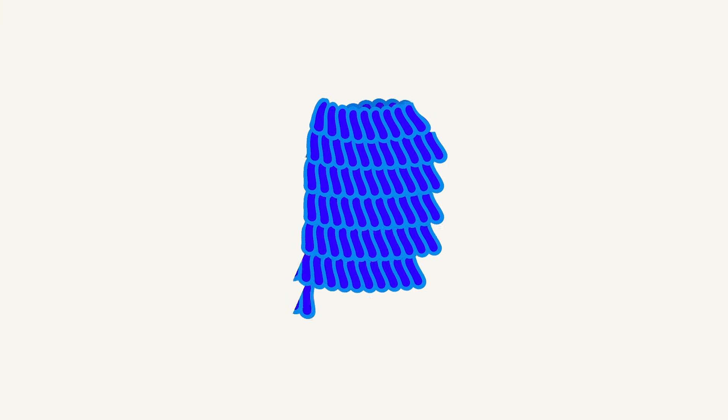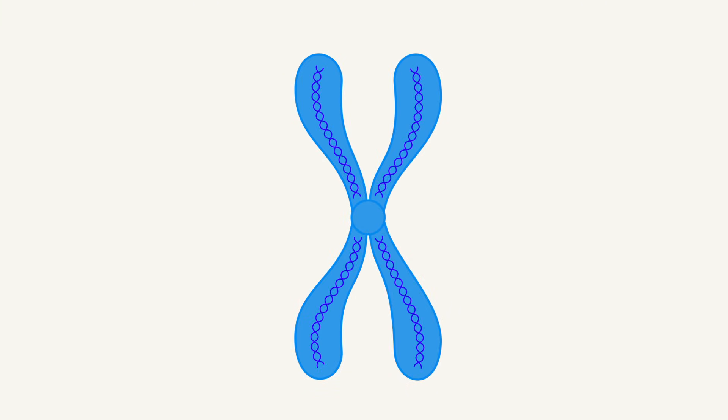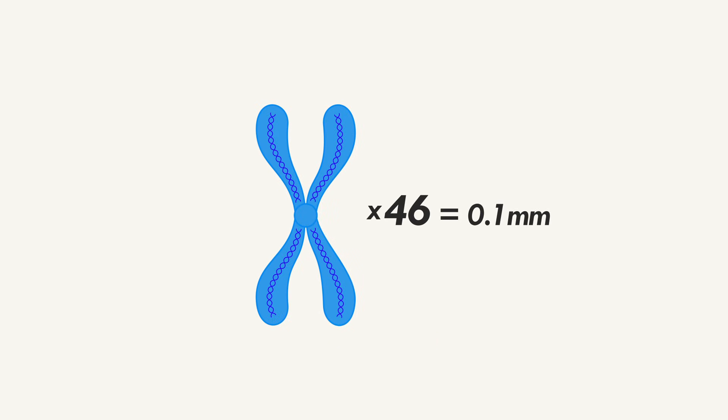Which are coiled again, and then again, and again, and again, until all 2 meters of DNA in our 46 chromosomes measure less than a tenth of a millimeter end-to-end. That is efficiency.